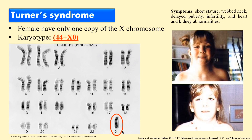Due to the absence of one X chromosome, certain characteristics develop in females, such as short stature, webbed neck, delayed puberty, infertility, and possible heart and kidney problems.